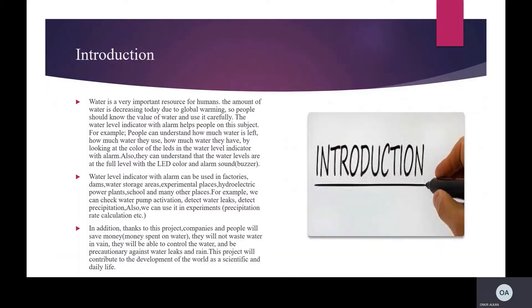We are now in the introduction part. Water is a very important resource for humans, especially for people in agriculture and irrigation. The amount of water is decreasing today due to global warming. So people should know the value of water and use it carefully. The water level indicator with alarm helps people on this subject. For example, people can understand how much water is left, how much water they use, and how much water they have, by looking at the color of the LEDs. They can also understand that the water level is full via the LED color and alarm sound.